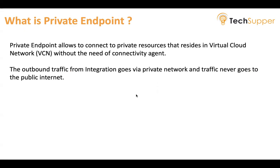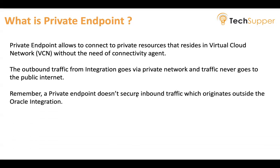The outbound traffic — when integration tries to connect to your private resources, that is called outbound or egress traffic. The outbound traffic from integration goes via the private network and traffic never goes to the public internet. From a security or network standpoint, this private endpoint feature is valuable because customers can ask: if integration and ATP are both OCI resources, why go to the public internet? With private endpoint you can restrict that, so only the private network is allowed to connect your private ATP or other resources via integration. Remember, a private endpoint does not secure inbound traffic — if a REST resource deployed in OCI sends a request to integration, that is not a private endpoint feature. The private endpoint feature only allows for outbound traffic from integration.